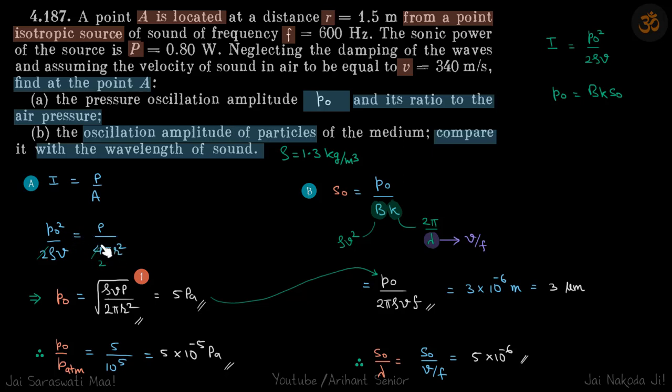From here we get P₀ in terms of r. Solving, we get P₀ = 5 pascals. We know atmospheric pressure is 10⁵ pascals, so this ratio comes to be 5 × 10⁻⁵. We can see the maximum pressure amplitude is very minuscule compared to the atmospheric pressure.